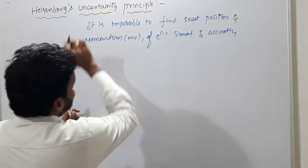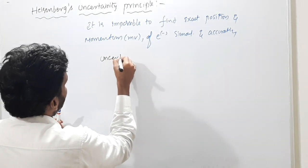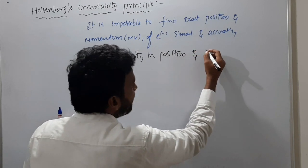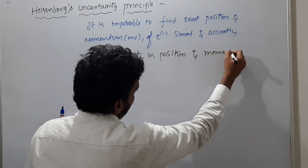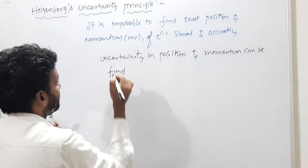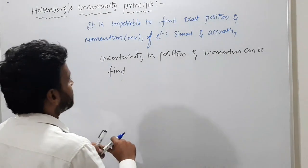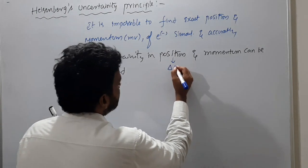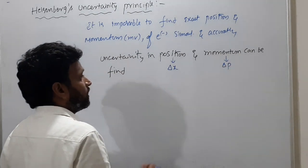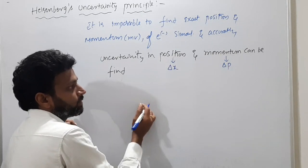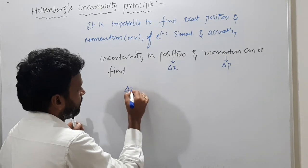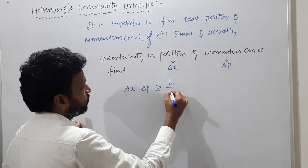Heisenberg said we can find the uncertainty. Uncertainty in position is represented as delta X and uncertainty in momentum as delta P. He gave a mathematical relation to know the uncertainty in position and momentum: delta X into delta P is greater than or equal to h/4π.